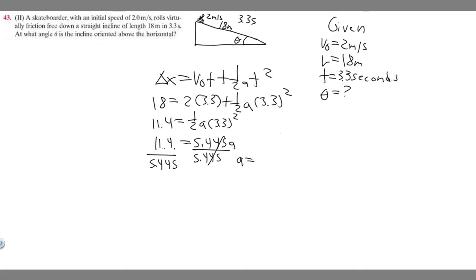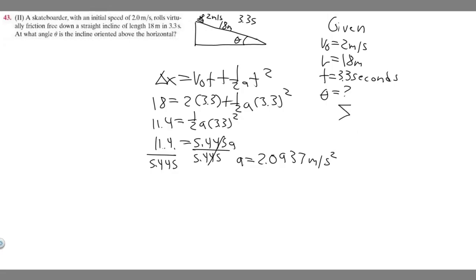Dividing both sides by 5.445, you get a equals 2.0937 meters per second squared. So this is our acceleration going down this incline. Now, the first thing to understand is that the sum of the forces equals mass times acceleration. So what we're going to want to do is draw a free body diagram of what's going on.